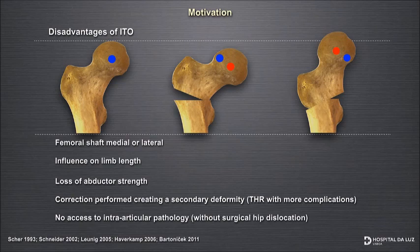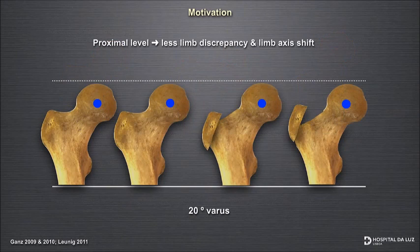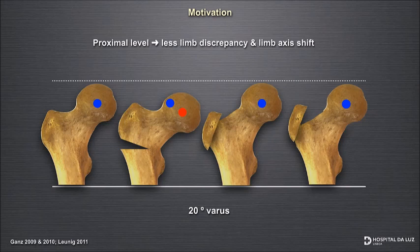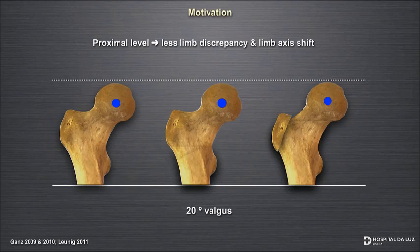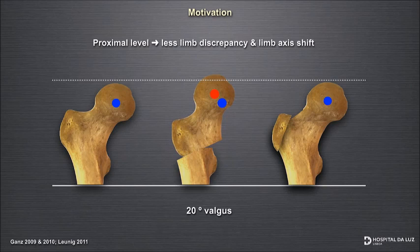But if we shift a little bit more proximal to the level of the osteotomy, to the femoral neck, in this case we are going to simulate a 20-degree varus osteotomy by doing a medial closed wedge or lateral open wedge — you have much less influence on those parameters. In the same way, if you produce a valgus osteotomy by doing a closed wedge medial resection osteotomy, you will have nearly no change on the center of rotation of the hip.